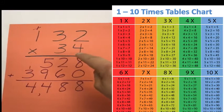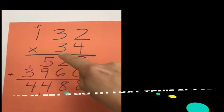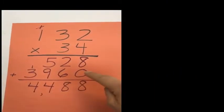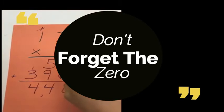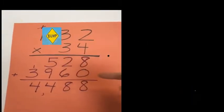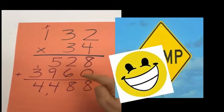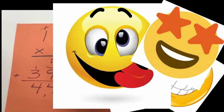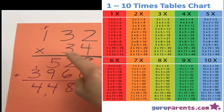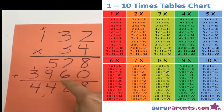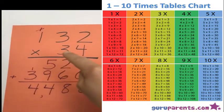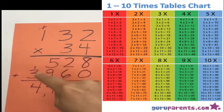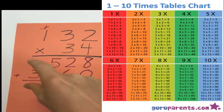Now I can move to the three — the tens place. Because I'm moving to the three, I go to another row of numbers. I put a zero in that first ones place because I'm in the tens place now — we call it bumping over. You can put a zero, an X, a star, a happy face, whatever you want. Now I'm on the three: three times two is six, three times three is nine, three times one is three.